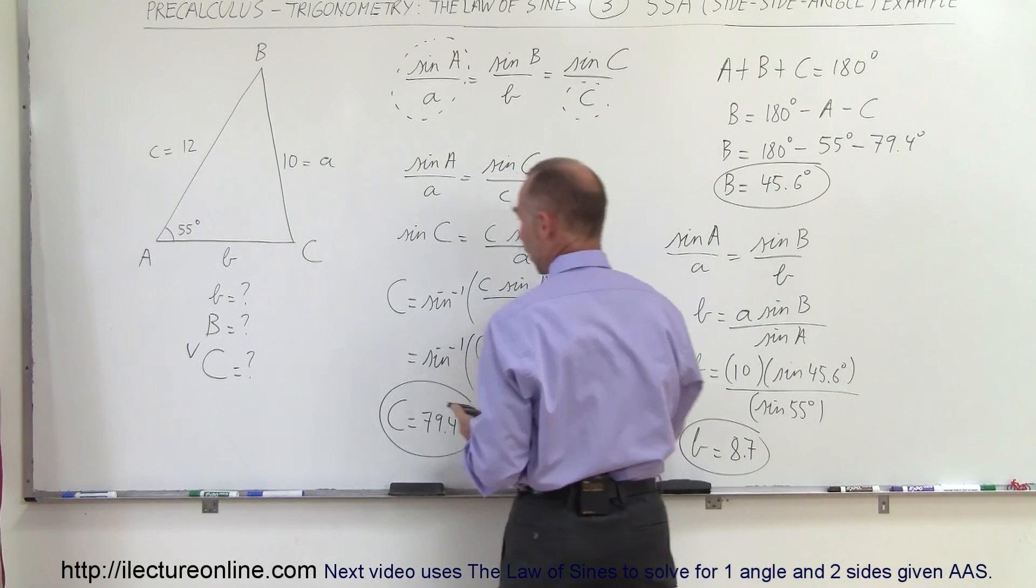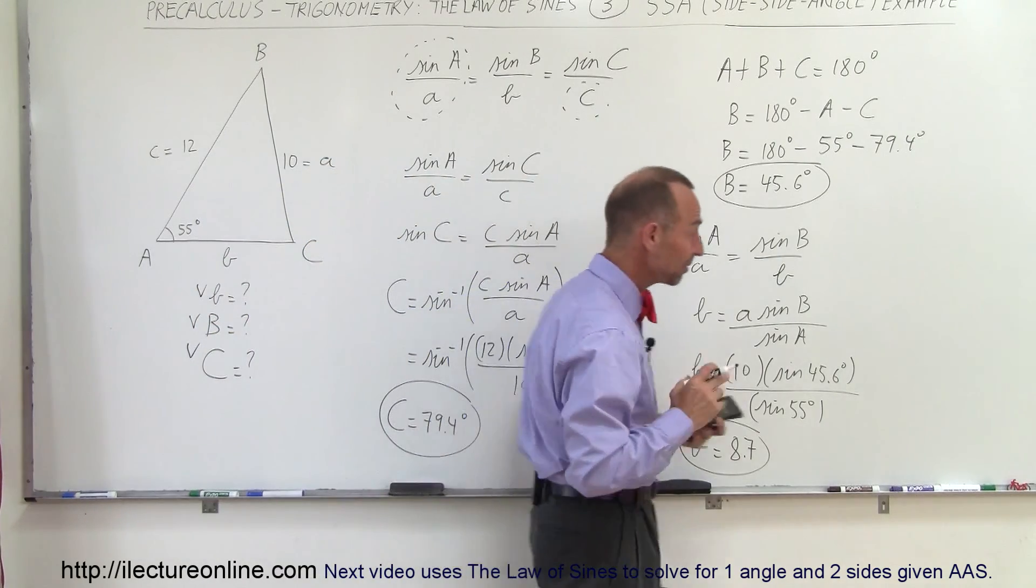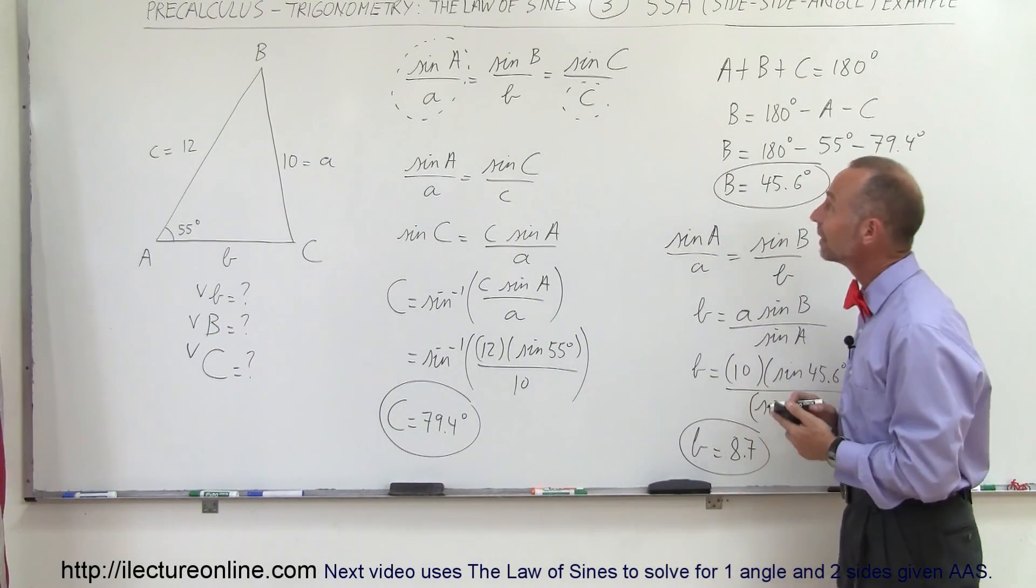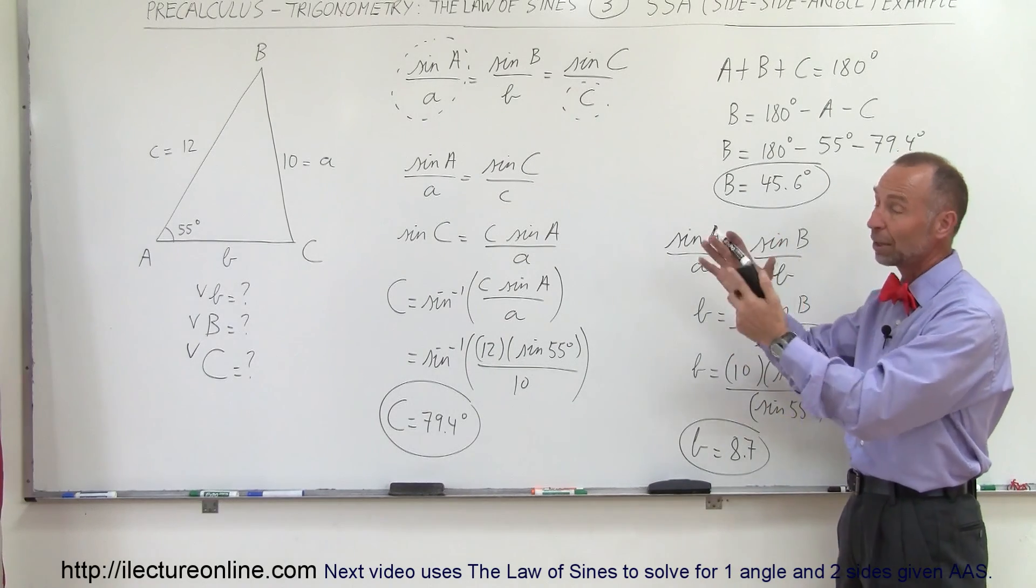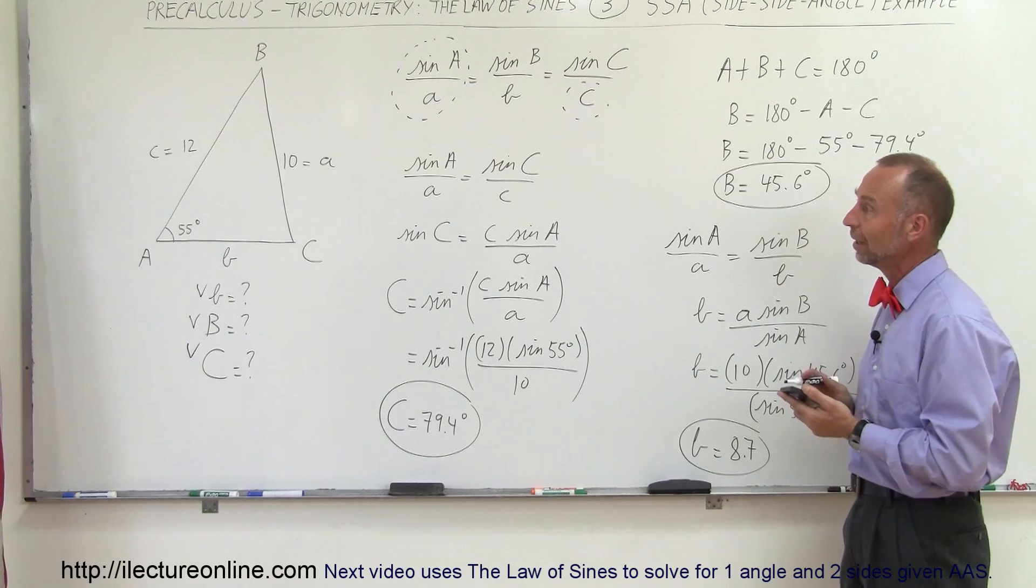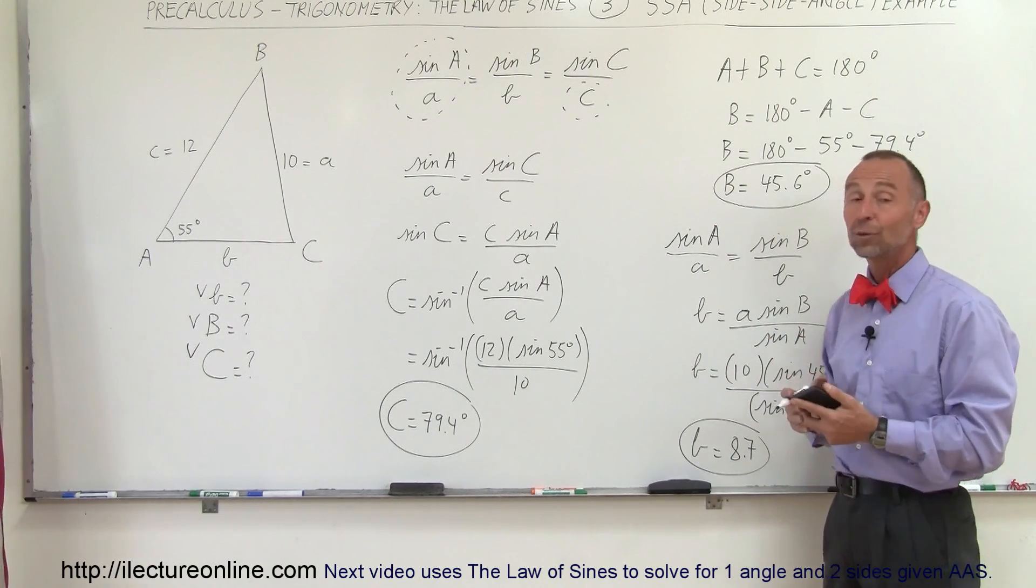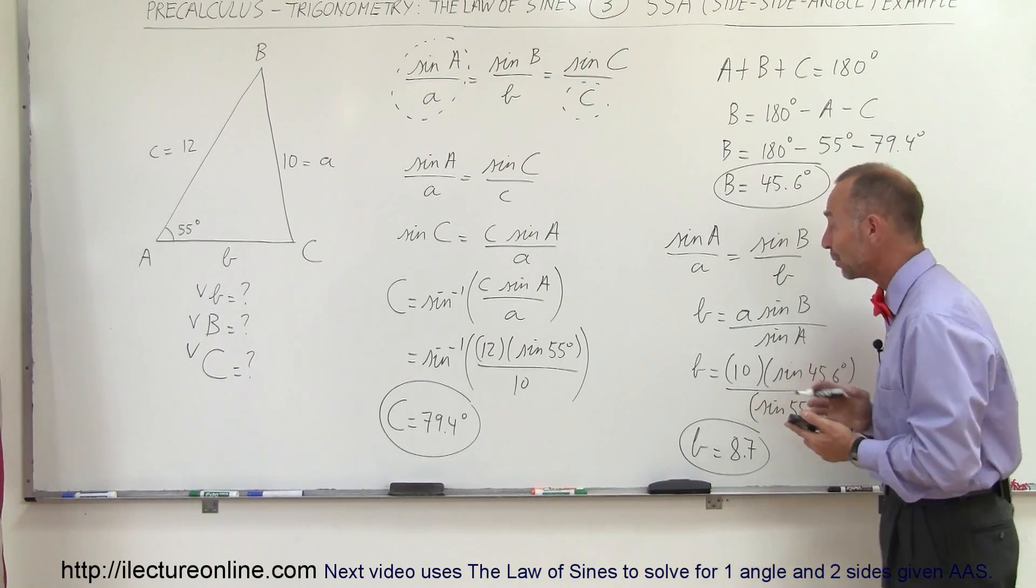And now we know all three unknowns, we know angle B and side B. And so that's how we do that. That's how we use the law of sines to come up with the unknown portions of the triangle. In this case, we had the side-side-angle given, so two sides and an angle were given, we were trying to find the other two angles and the third side. That's how we do that.